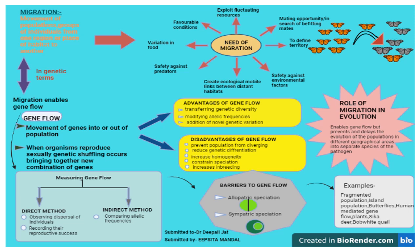Now we will discuss how migration actually affects the evolution process. Migration mostly enables gene flow, and it is one of the most important things. Gene flow means gene migration or allelic flow — it is the movement of genes into or out of a population.